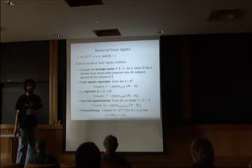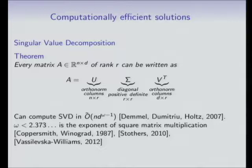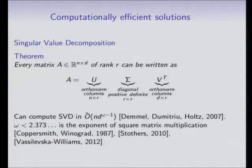Before talking about speeding up solutions, let me tell you how to compute a solution even slowly to any of these problems. Every matrix has what's known as a singular value decomposition — writing a matrix A as the product of three matrices: the middle matrix Sigma is diagonal with strictly positive entries (the singular values), and U and V have orthonormal columns. You can approximate the SVD in time N times D squared using standard matrix multiplication algorithms.